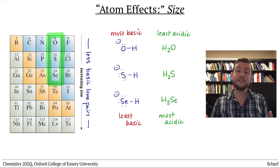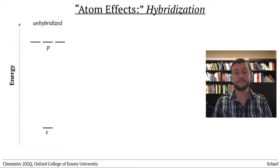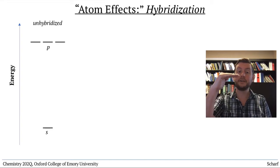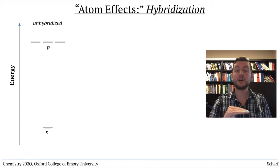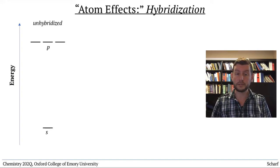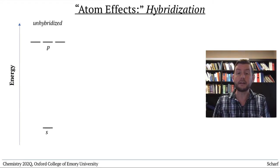The final atom effect is hybridization. All other things being equal, lone pairs in SP3 hybrid orbitals are higher in energy than lone pairs in SP2 hybrid orbitals, which are higher in energy than lone pairs in SP hybrid orbitals. The reason for this is that hybridization involves the averaging of different numbers of S and P orbitals, including averaging their energies.